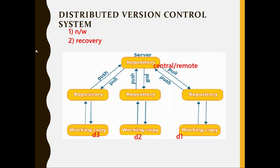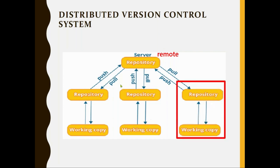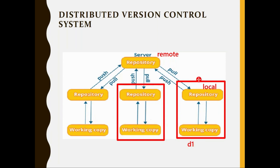Here is the distributed version control system architecture. You can see there is a central server or remote repository where all the code bases are kept, and every individual developer has their own workstation. In the workstation of each individual developer, there is another repository called a local repository. In distributed architecture, you have two repositories: one remote repository and one local repository.